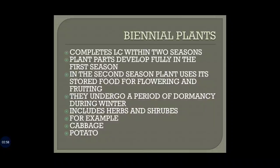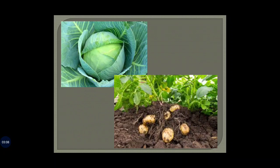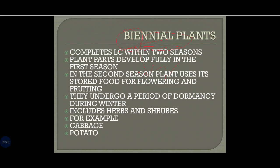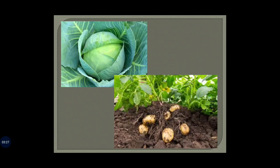Biennial plants complete their life cycle within two seasons. By the name you would understand that bi means two, and annual means the period — so two time periods. It takes two time periods to complete its life cycle.